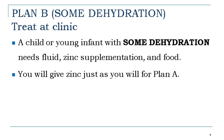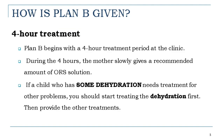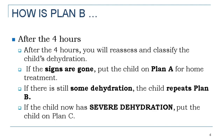Plan B begins with a four-hour treatment period at the clinic. During those four hours, the mother slowly gives the recommended amount of ORS. If a child who has some dehydration needs other treatments or has other problems, you should start treating the dehydration first, then provide other treatments later. After four hours of treatment at the clinic, you will assess and classify the child's dehydration.